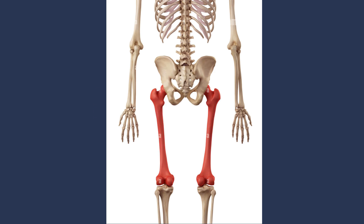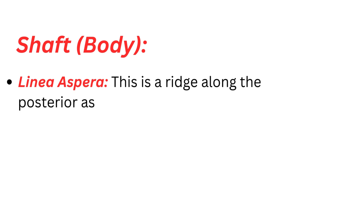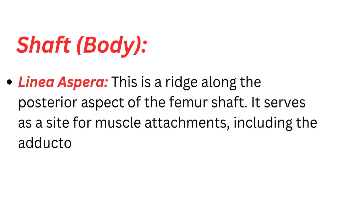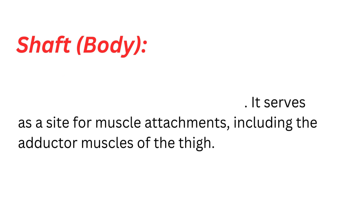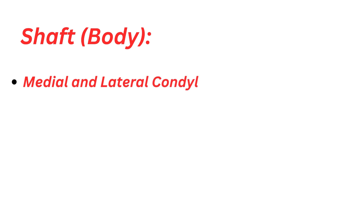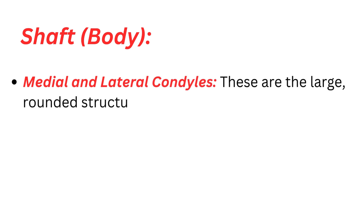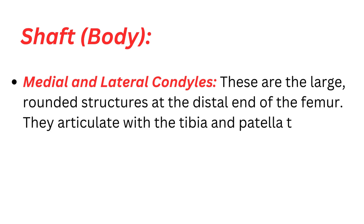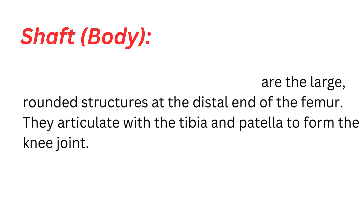Linea aspera: this is a ridge along the posterior aspect of the femur shaft. It serves as a site for muscle attachments, including the adductor muscles of the thigh. Medial and lateral condyles: these are large, rounded structures at the distal end of the femur. They articulate with the tibia and patella to form the knee joint.